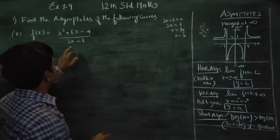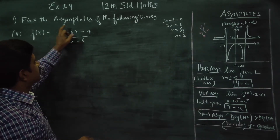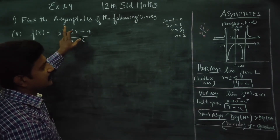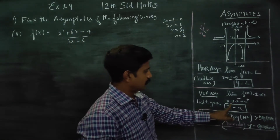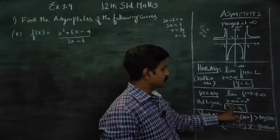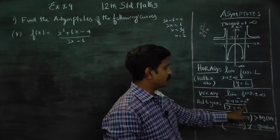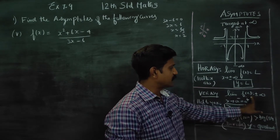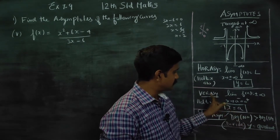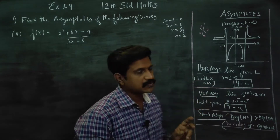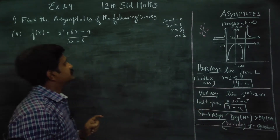When you substitute x = 2 into the function, it becomes infinity. When you substitute a value for x and the function becomes infinity, it means there is a vertical asymptote.